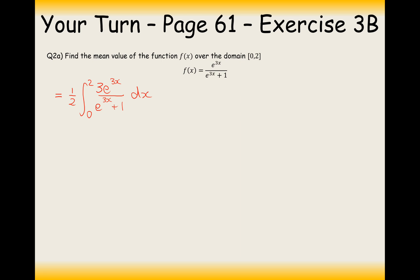So I can't just introduce a three there without balancing it out as the coefficient at the front. It's going to have to balance out by dividing by three at the front. So I've now got one sixth at the front. Now I've got a perfect ln integral where the differential of the bottom is equal to the top. So it's going to be ln e to the three x plus one.